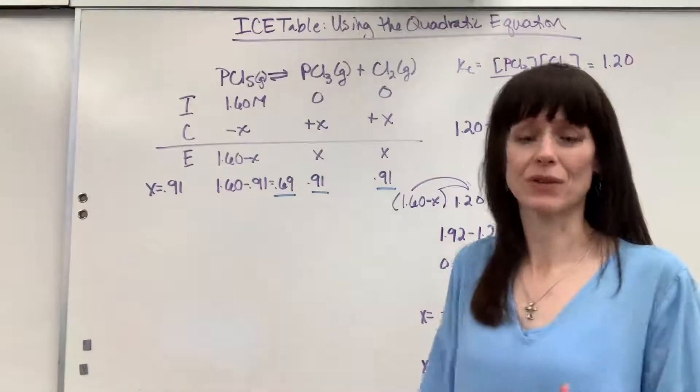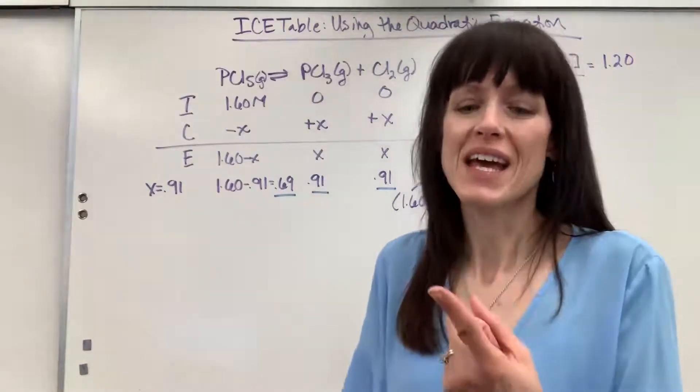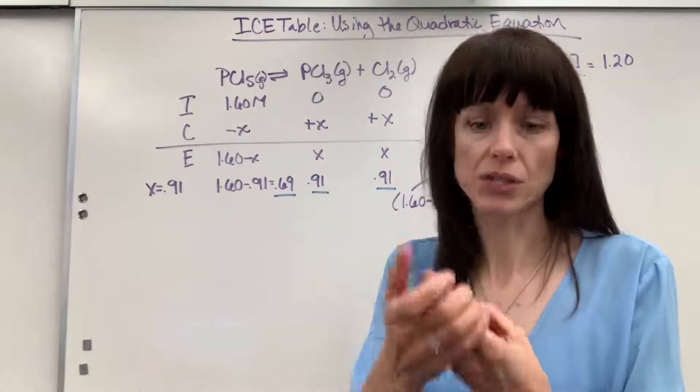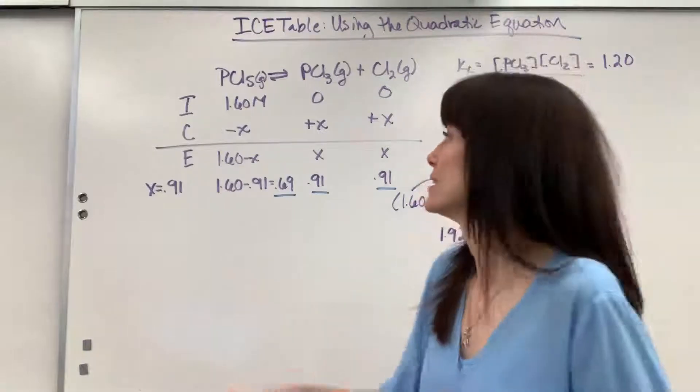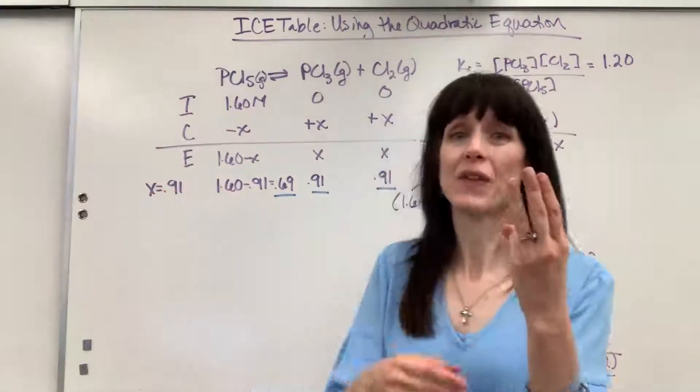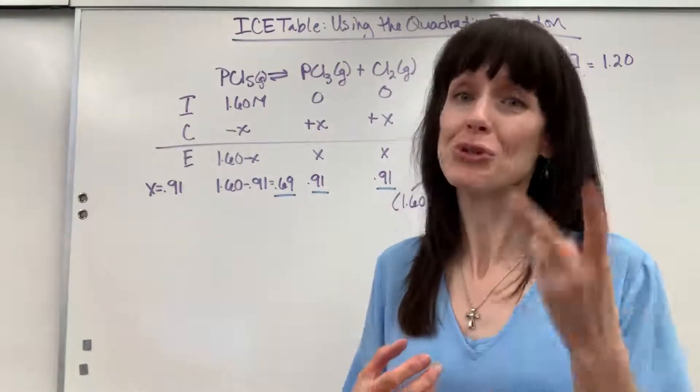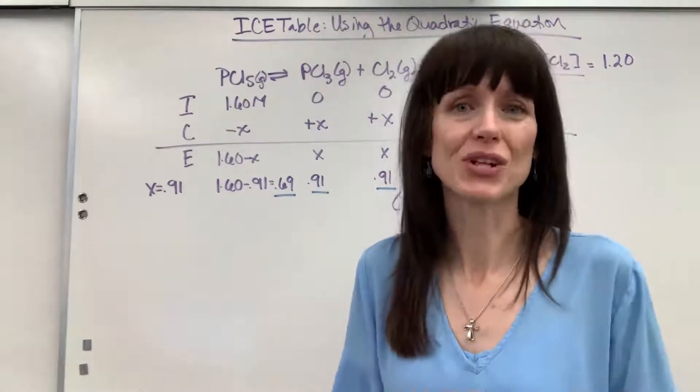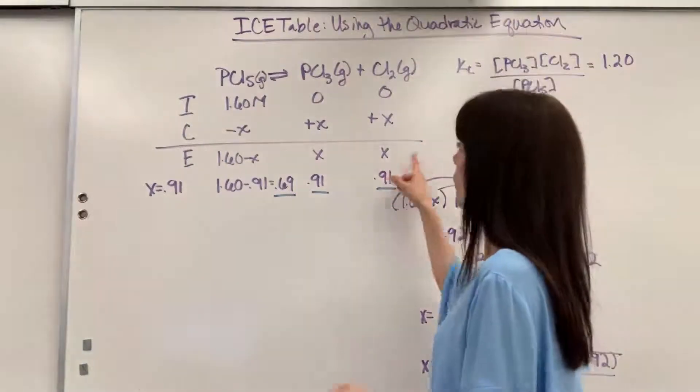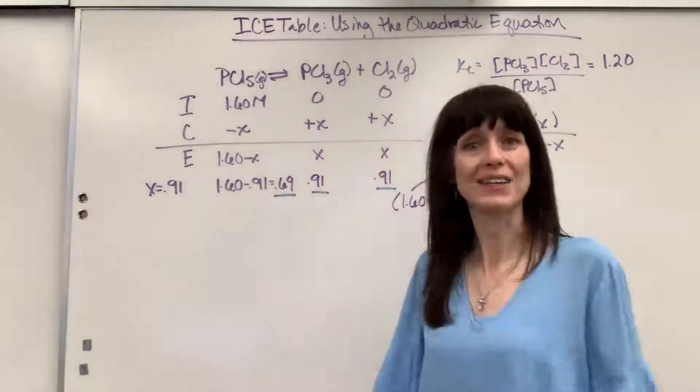Now, remember when we're doing ice tables, there are always three pieces of information. It's going to be initial concentration, final concentration, which is equilibrium, and the third one is the equilibrium constant. So you will always, one way or another, be provided two pieces of information. You have to find the third. So on this one, they want to know what are the concentrations at equilibrium.